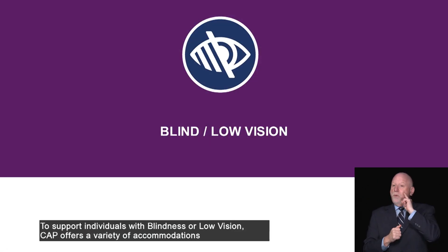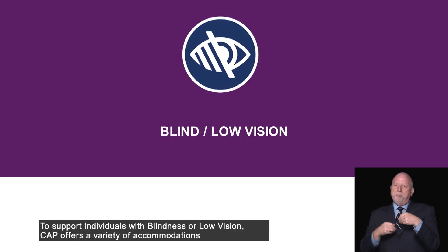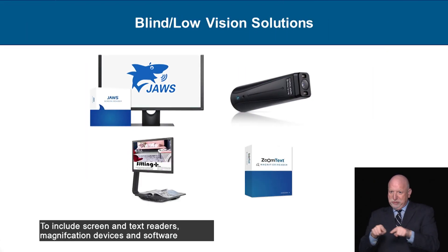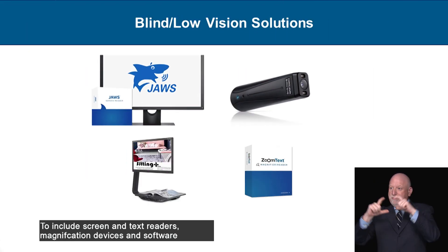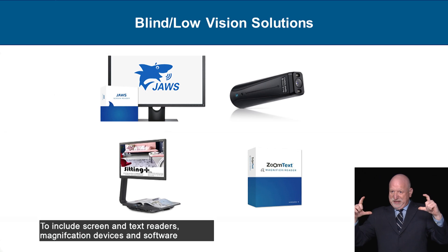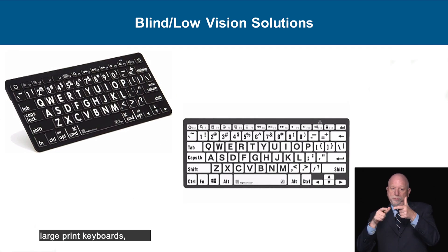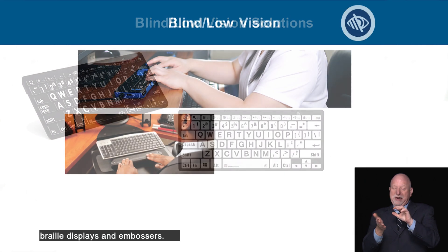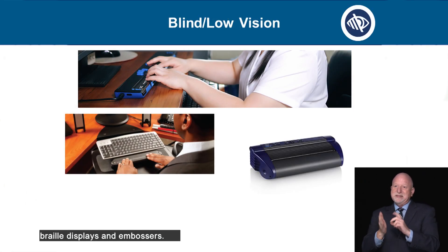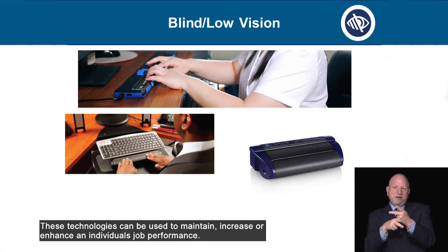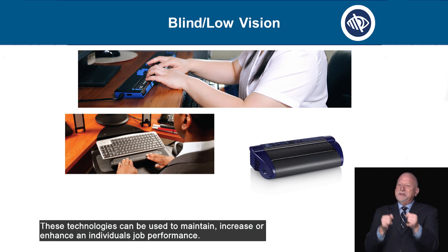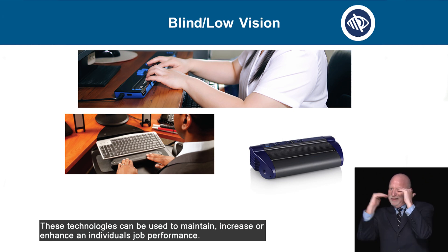To support individuals with blindness or low vision, CAP offers a variety of accommodations to include screen and text readers, magnification devices and software, large print keyboards, braille displays, and embossers. These technologies can be used to maintain, increase, or enhance an individual's job performance.